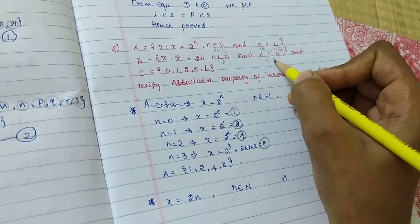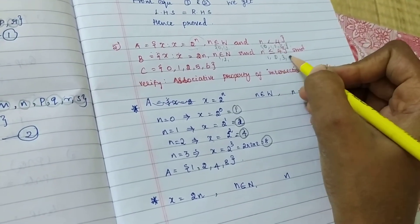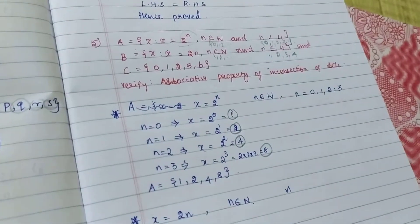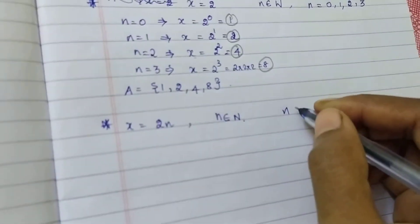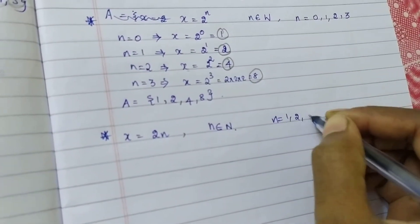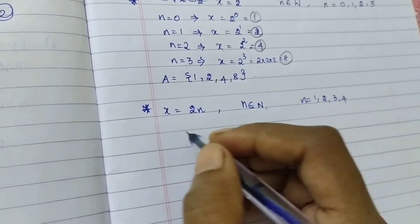But, less than or equal to means 1, 2, 3, equal to means I mentioned that value also 4. So, N equal to 1, 2, 3, 4. So, I can find out.